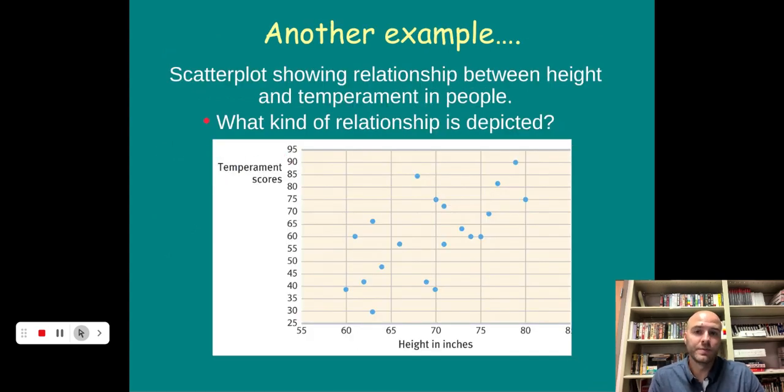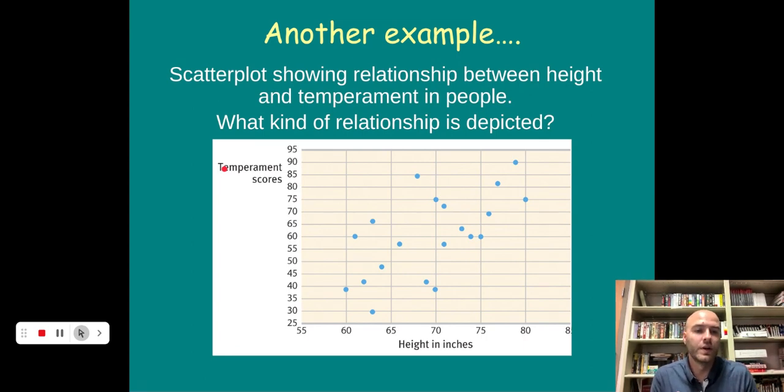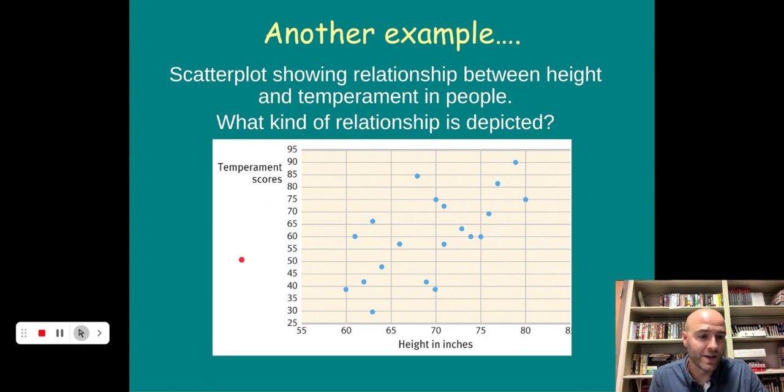Another example, real world scenario. A scatterplot showing the relationship between height and temperament in people. What kind of a relationship is depicted? First we've got to remember what temperament is. Temperament is kind of like people's emotional stability. Are they calm, relaxed, a little more fiery, quick to anger? You know, do they have a short fuse? So what is this scatterplot telling us? This seems to be claiming that there's a correlation between height and temperament scores. So people who are taller tend to score higher on temperament in terms of being a little bit more relaxed, go with the flow. This shows a pretty moderately positive correlation. They seem to move together.